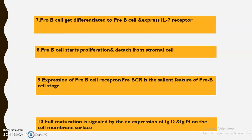Fully matured B cells express IgD and IgM immunoglobulin molecules on their cell surface.